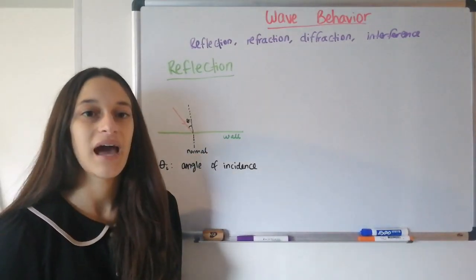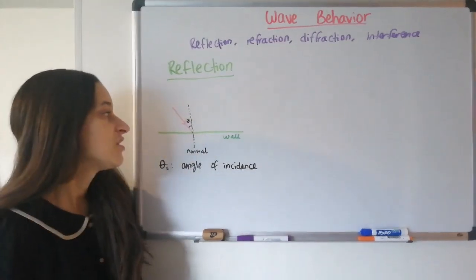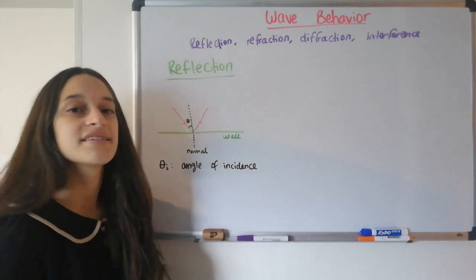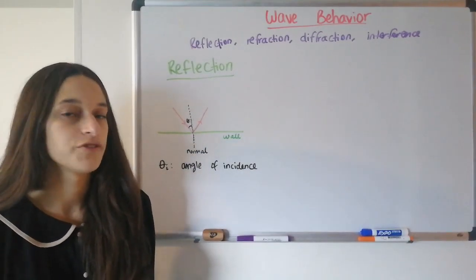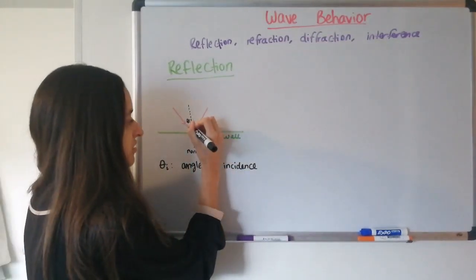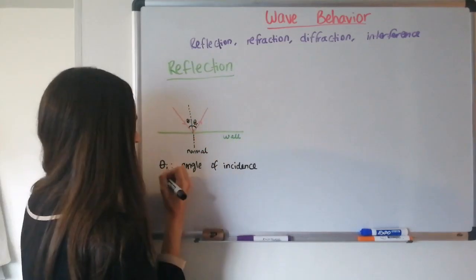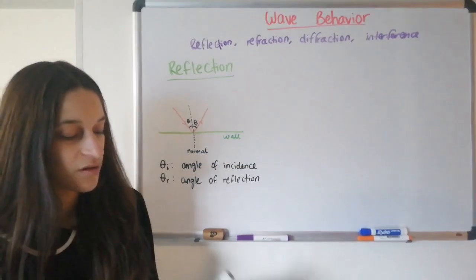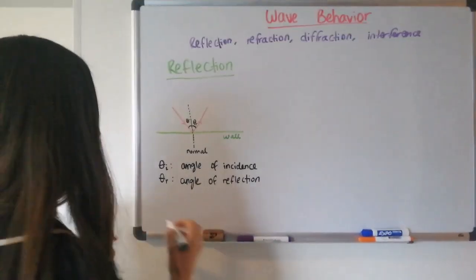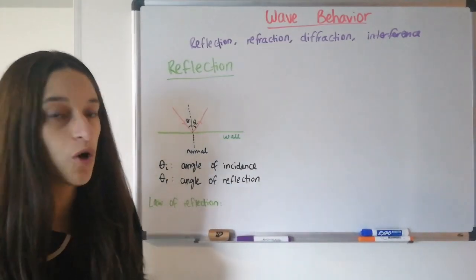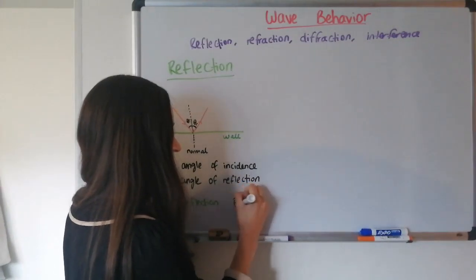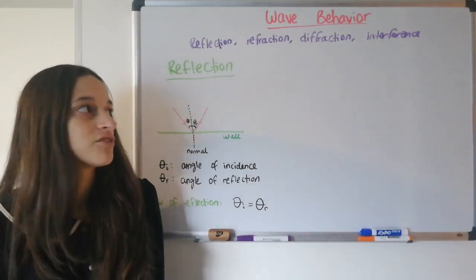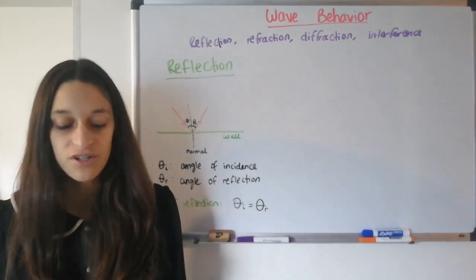What we want to know is how the wave will reflect off of the surface — in which direction will it go? That angle, called the angle of reflection, is always exactly the same as the angle of incidence. That is called the law of reflection. So we have theta I, the angle of incidence, and theta R, the angle of reflection. The law of reflection states that the two angles will always be the same: theta I equals theta R. This always happens in reflection, and only in reflection.